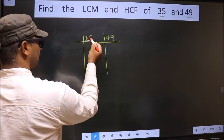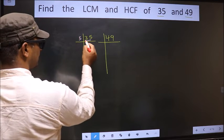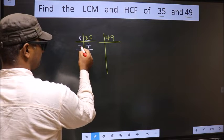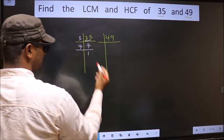Here we have 35. 35 is 5 times 7. Now we have 7. 7 is a prime number, so 7 times 1 is 7.